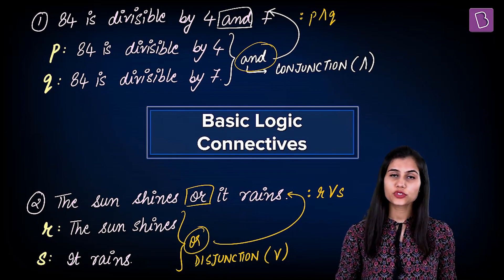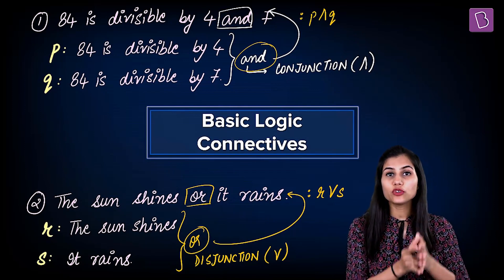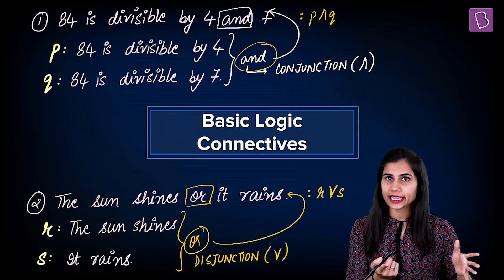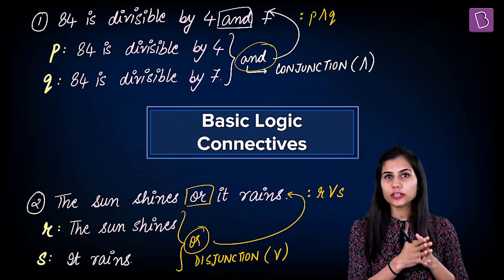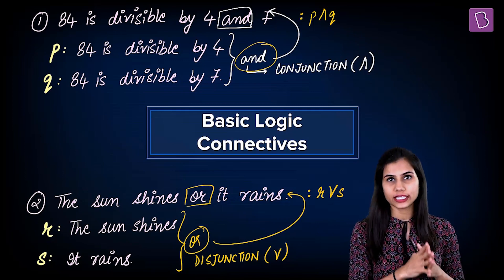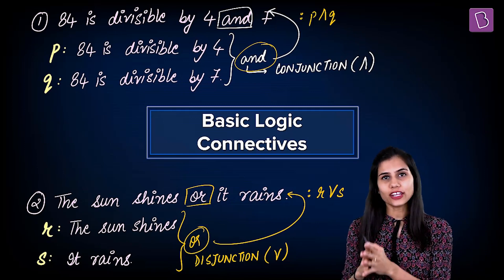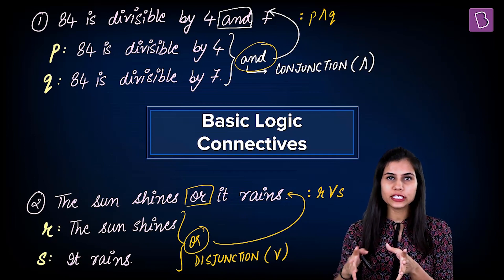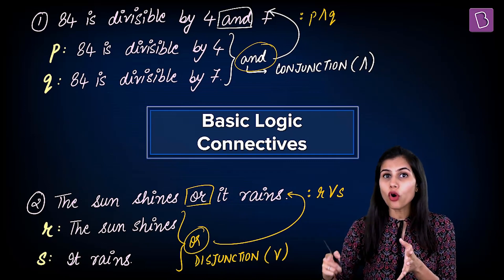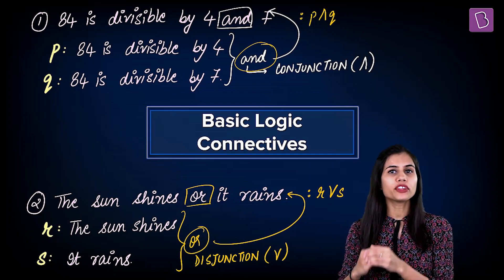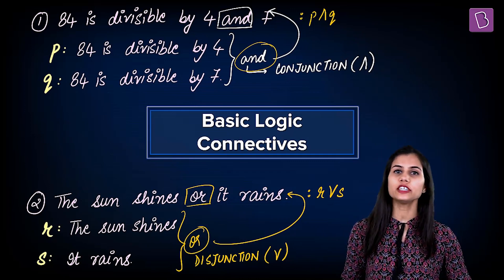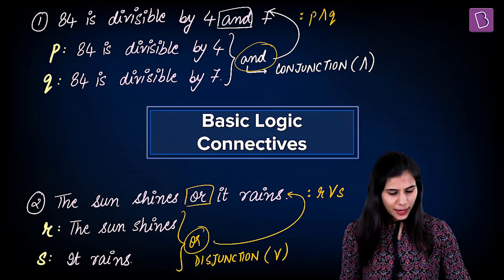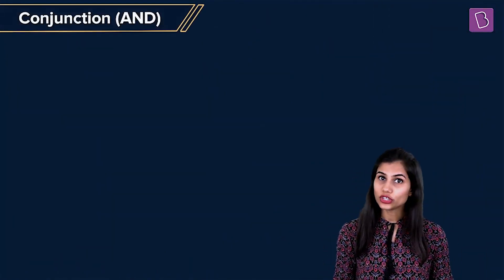The very first agenda is to understand how the truth value of a conjunction statement — a compound statement with AND connective — is dependent upon the truth and falsity of its component statements. The next agenda will be to understand how the truth value of a disjunction statement, with OR connective, is dependent upon the truth and falsity of its component statements. Beginning with conjunction.